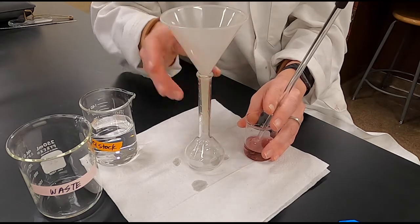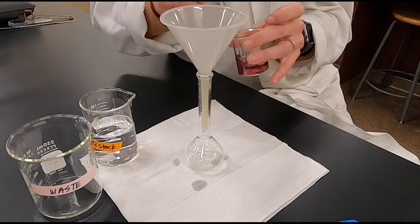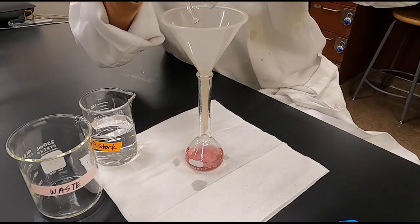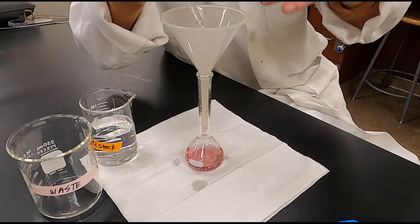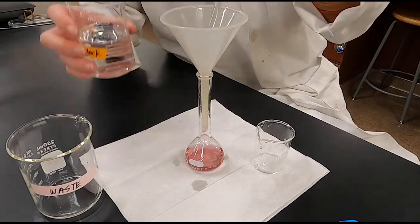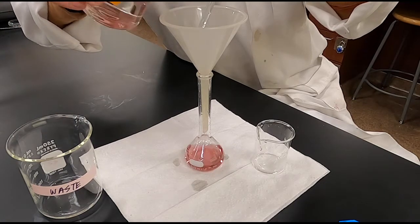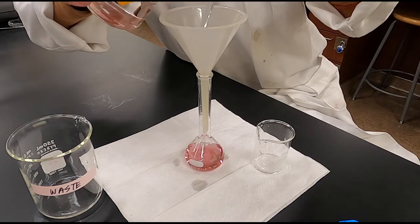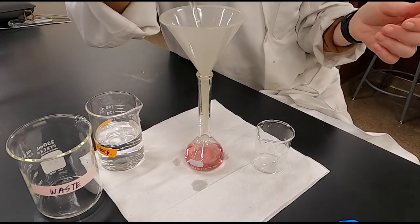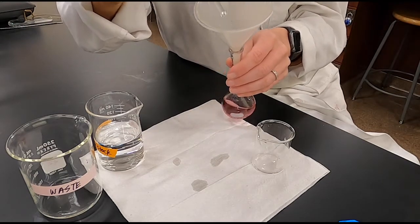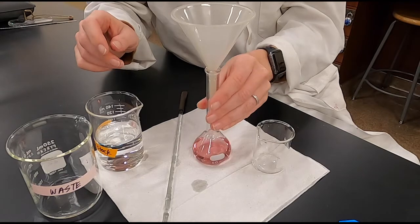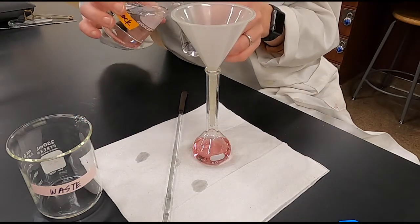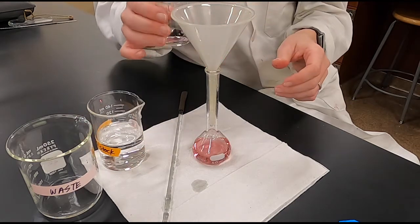When you do a quantitative transfer, you want to use a funnel so that you don't spill any. Then you want to make sure that you rinse off any glassware that came into contact with your solution. I'm going to rinse off this stir rod, and then I'll also rinse out the beaker another time and the funnel. This ensures that all of the solid that we weighed out actually makes it into the flask.